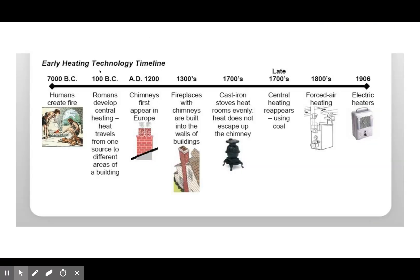Early heating technology started with fire. The Romans built channels underneath floors. Then we were able to bring fire inside the house with chimneys to get rid of smoke. Cast iron holds the heat and releases it gently, whereas open fire is all over the place. Then came central heating, forced air, and electrical heaters.